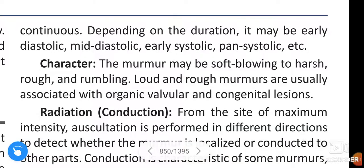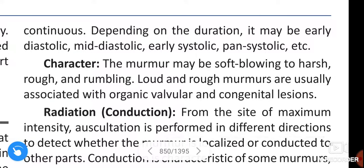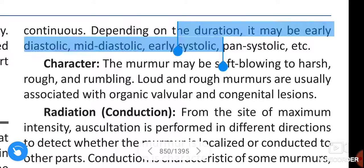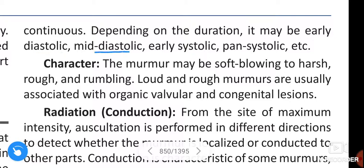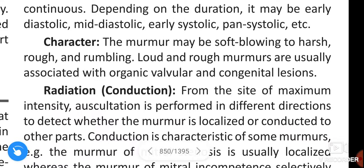Next, timing and duration. Depending on the timing, murmurs are classified into systolic, diastolic, or continuous. Depending on the duration, it may be early diastolic, mid-diastolic, early systolic, or pan-systolic.